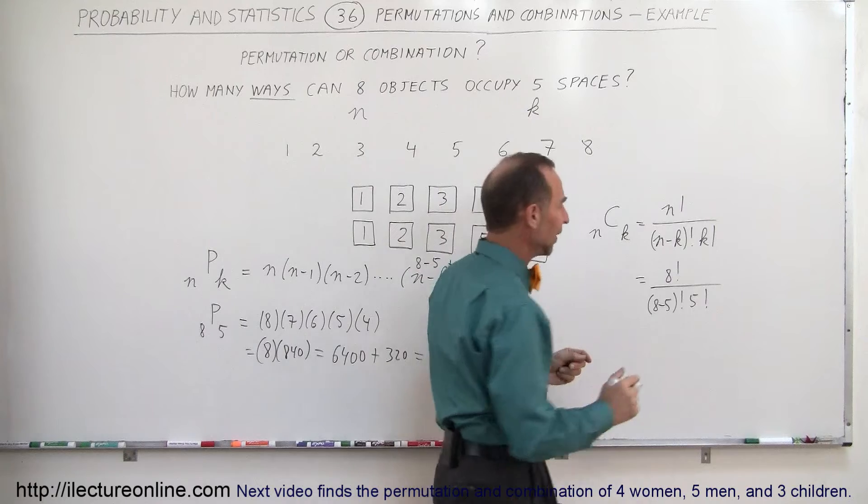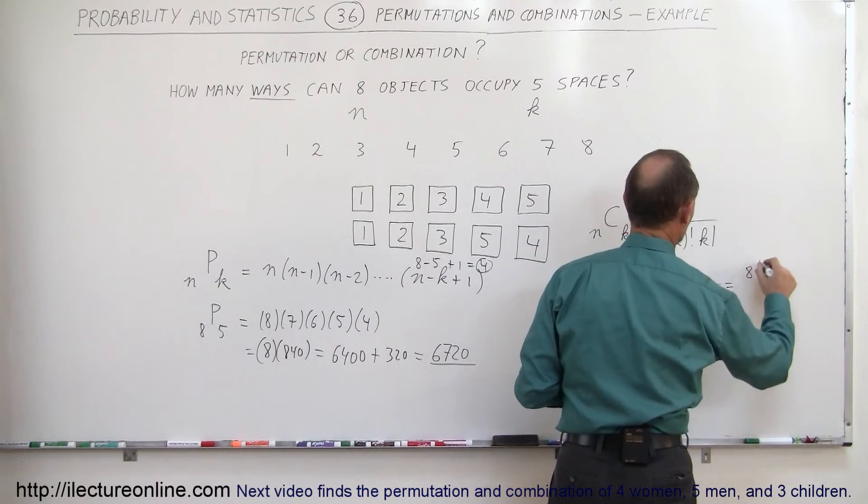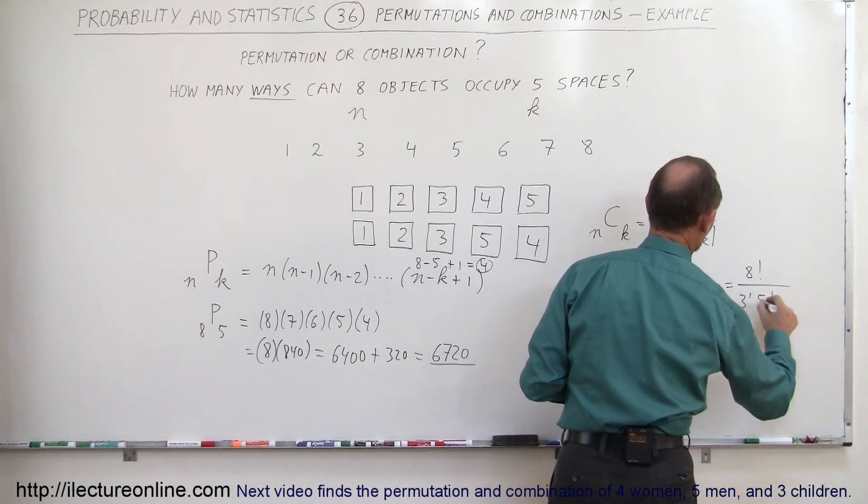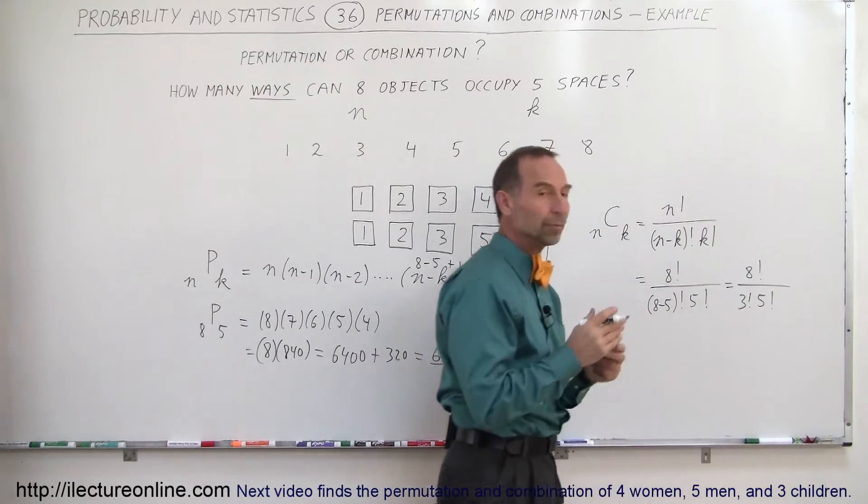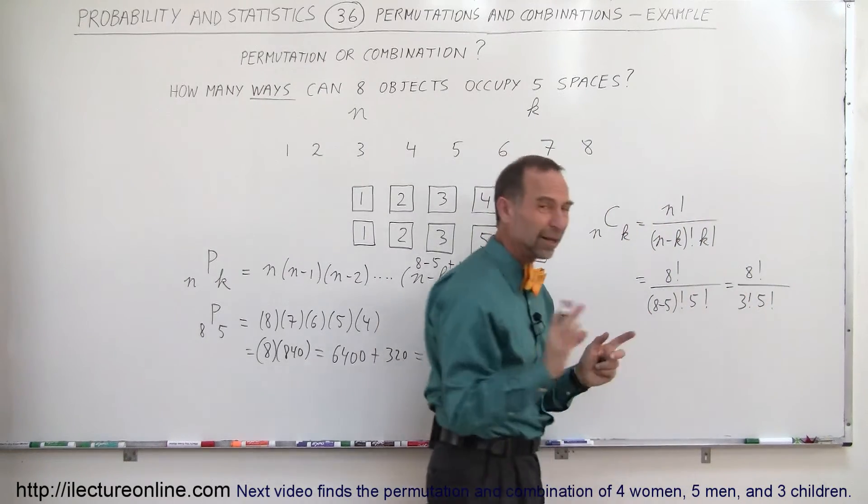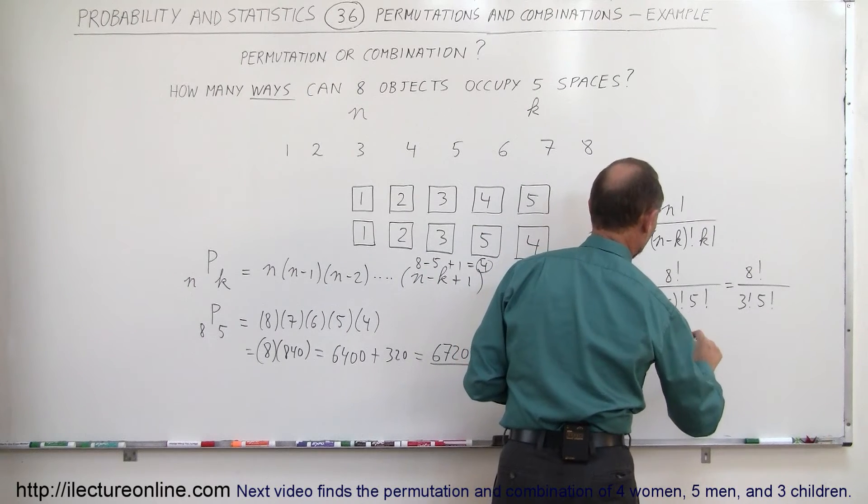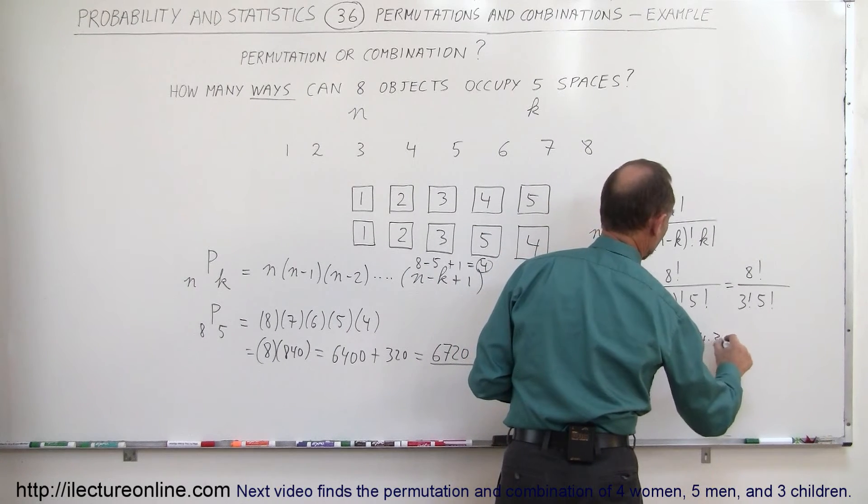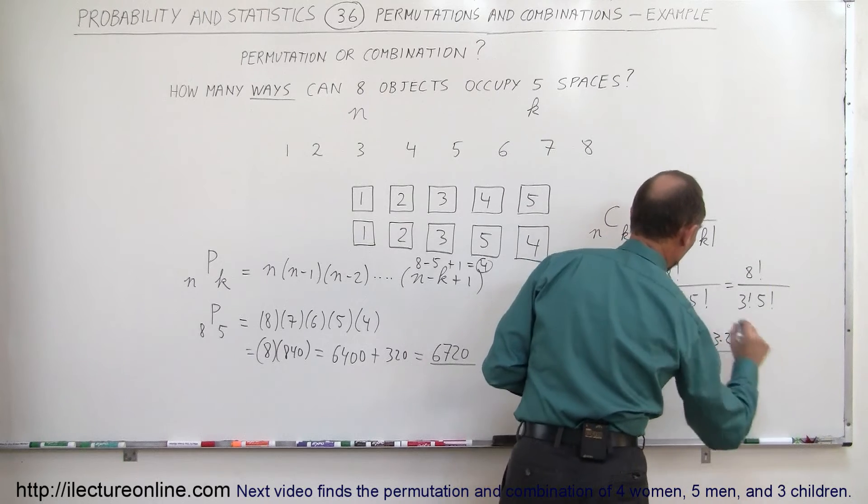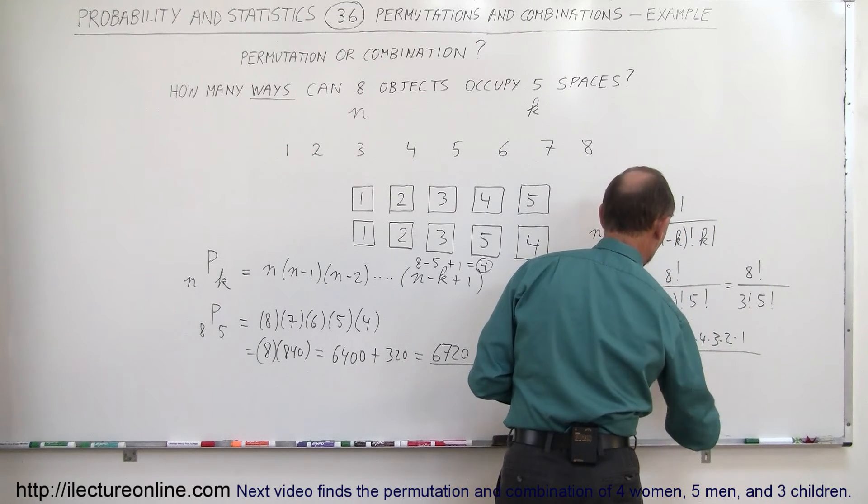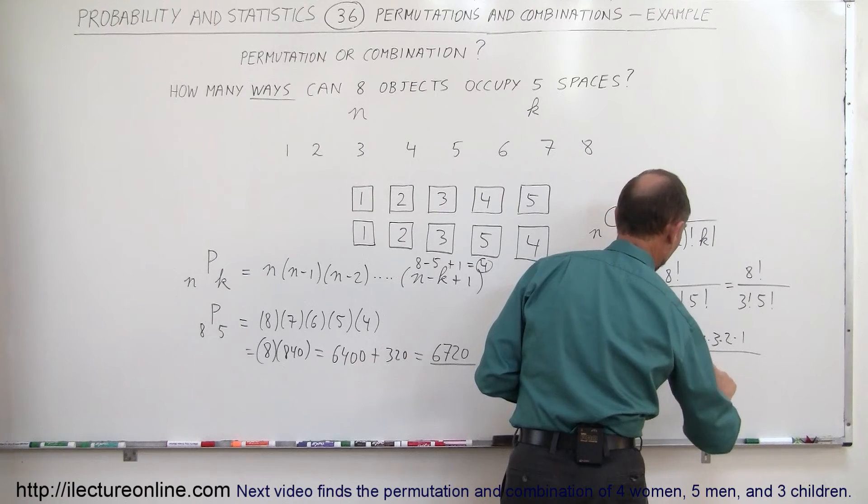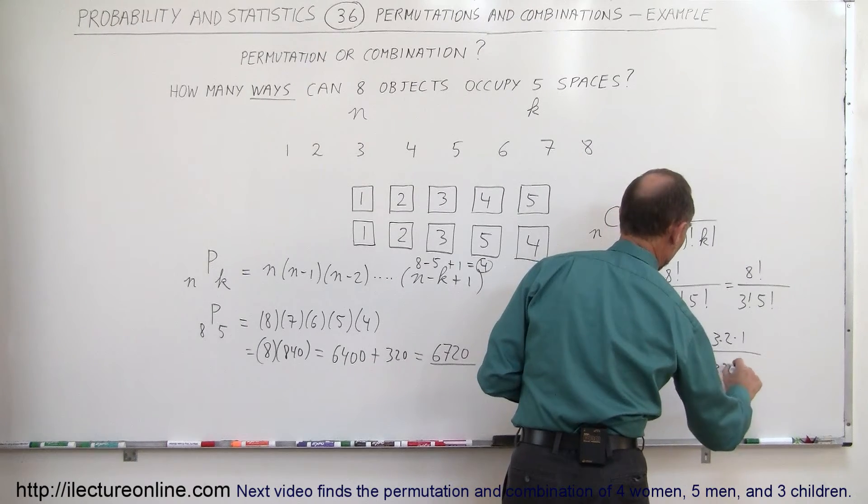Now, simplifying this some more, this would be equal to 8 factorial divided by 3 factorial times 5 factorial. Now remember that factorial means, for example, 8 factorial would simply be 8 times 7 times 6 times 5 times 4 times 3 times 2 times 1, divided by 3 times 2 times 1 and multiply that times 5 times 4 times 3 times 2 times 1.